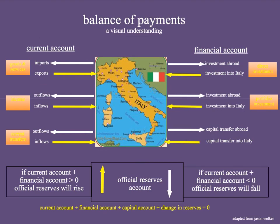And there's one more thing I want to layer into your brain. In the end, the current account plus the financial account plus the capital account — which I have included in the financial account, but you can think of them separately — plus the change in reserves is going to equal zero. We'll talk about why that's true later, but I just want you to accept that. Before you have all the information in your head, you just need to accept certain things, and that's what I want you to accept.